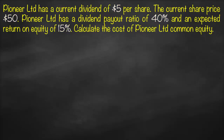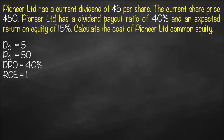Let's start with the variables given in the question. We have a current dividend — 'current' means at present, so this is D0, not D1 — equal to $5. The current share price, meaning the price today, is P0 = $50. We also have a dividend payout ratio of 40% and a return on equity of 15%.